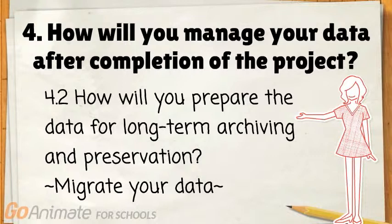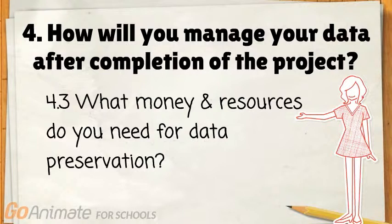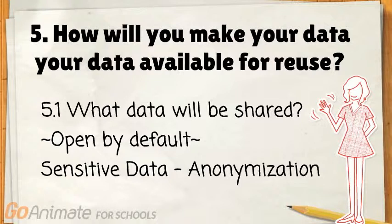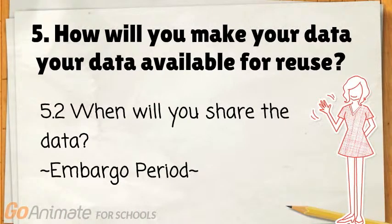Do you need to migrate your data to current formats if the old formats become obsolete? What data will be shared? Many funding agencies require researchers to open data by default. If you cannot share your data or can only share a portion of your data, you have to explain why. A useful strategy for handling sensitive data is anonymization. Data access would normally be delayed until after all results and findings from the data have been published. An embargo period means a specific period of time to restrict access to the data, and it varies from six months to two years.